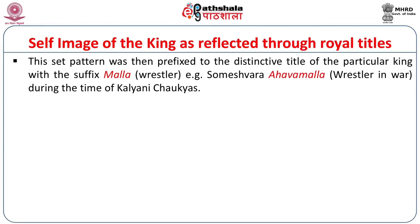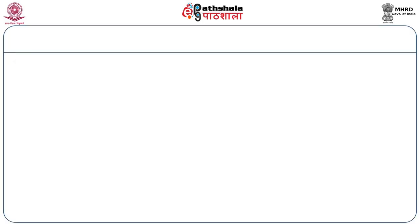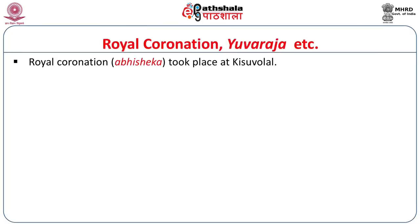During the Kalyani Chalukya period, each king had a distinctive title with the suffix Malla — meaning Wrestler — added to the imperial epithet. For instance, Someshwara, the Kalyani Chalukya king, held the title Ahava Malla, meaning Wrestler in War. This reflected how the king projected himself to both the ruled population and his associates. Royal coronation was important and generally held at a place known as Kisuvolal, described as Veera Simhasana, and known in modern times as Pattadakal — meaning coronation stone.